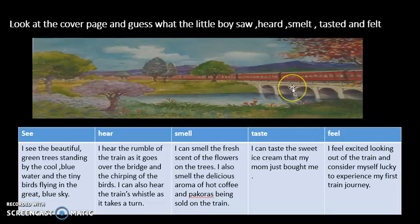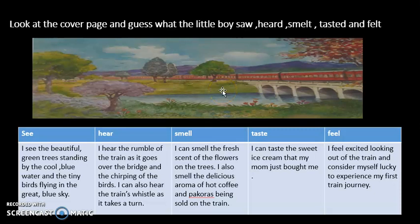Now, what can you taste? I have written: I can taste the sweet ice cream that my mom just bought me. The little boy is on the train and his mom has just bought him a delicious sweet ice cream. You can write that you can taste the hot pakoras or the spicy chana — whatever you have tasted on the train. For feel: I feel excited looking out of the train. We are writing from the boy's perspective and we know he was excited because it is his first train journey. So I'm writing: I feel excited looking out of the train and consider myself lucky to experience my first train journey.